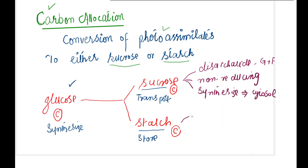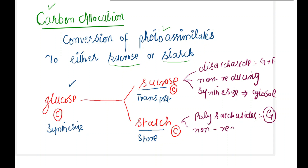Starch is a polysaccharide sugar. Polysaccharide means it is made of many monosaccharides, and the repeating unit is basically glucose. Glucose is the repeating unit in the formation of starch. All polysaccharides are non-reducing sugars. Starch is stored in the stroma part of the chloroplast. This is the difference between sucrose and starch.